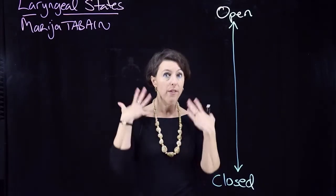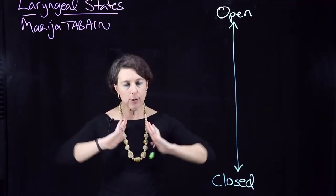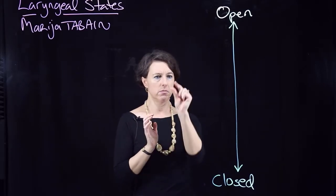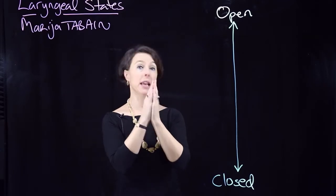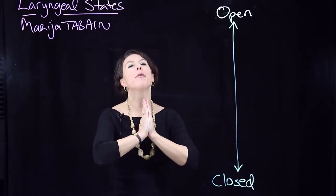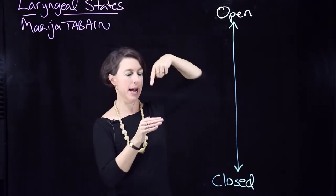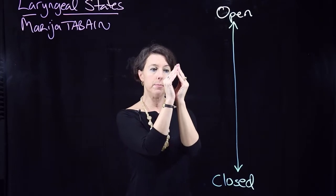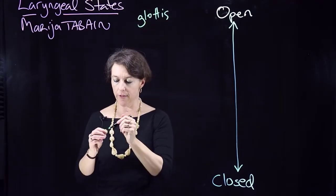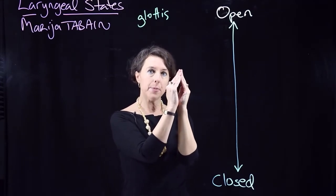Let's start with the most basic: what we call modal voicing — regular, ideal voicing in linguistics. The air is coming up from the lungs, and the vocal folds, which are just a small part of the larynx, are really tiny — I think of them like a small elastic band. The air pushes those vocal folds apart. Looking down from above at the larynx, there's a gap. That gap in the middle is called the glottis — the space between the vocal folds.